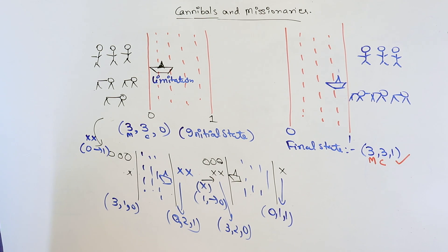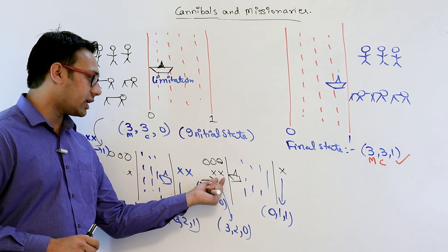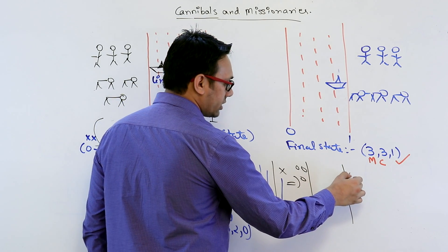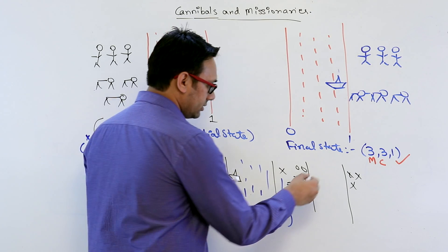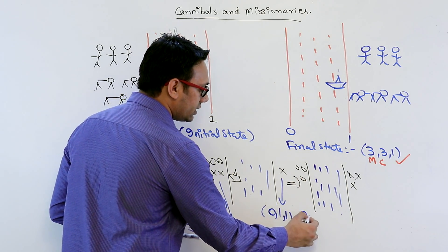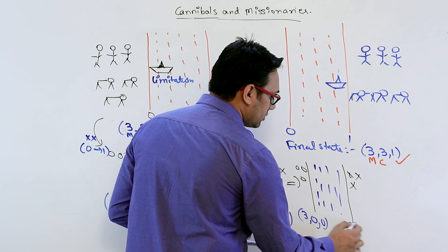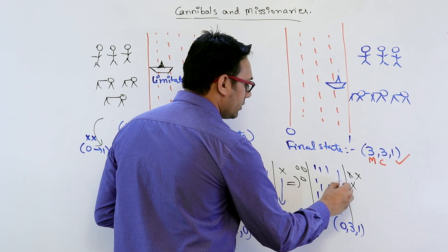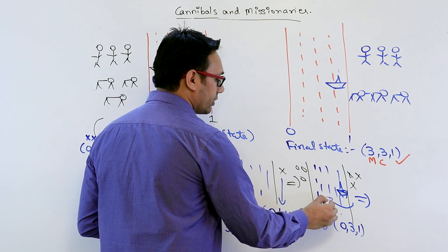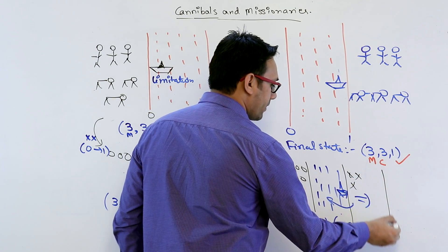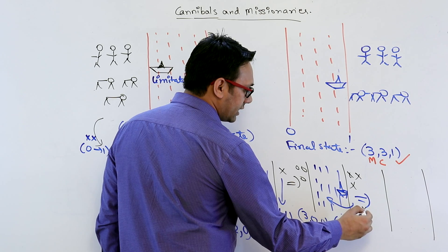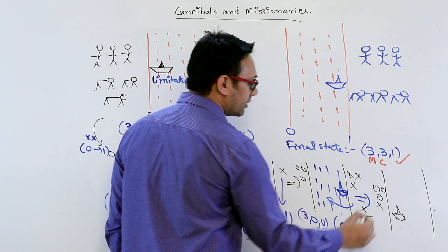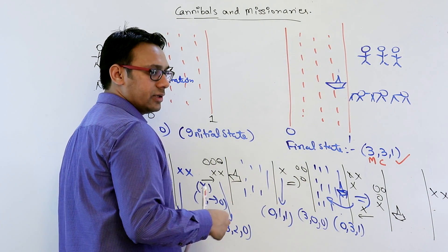Next, you ask the remaining cannibal to go from location 0 to location 1. Your state will look like: three missionaries, zero cannibals at bank 0, and zero missionaries, three cannibals at bank 1. Then one cannibal takes the boat back from that location to this location.